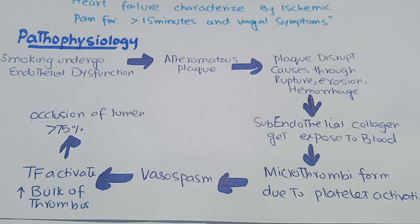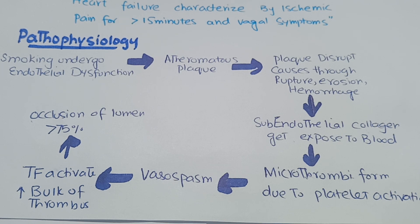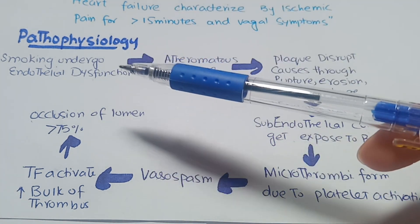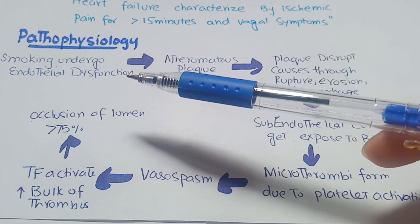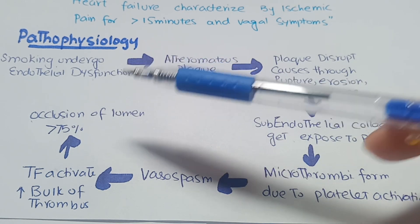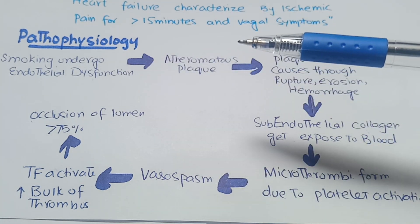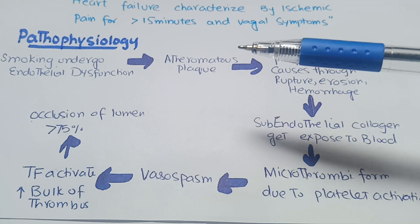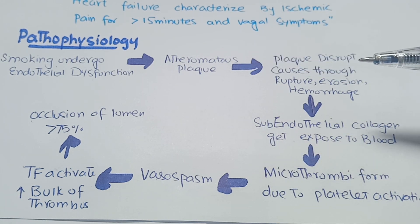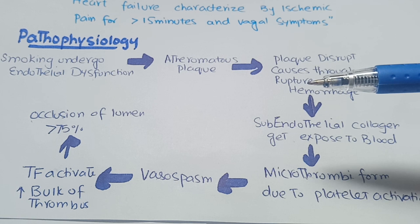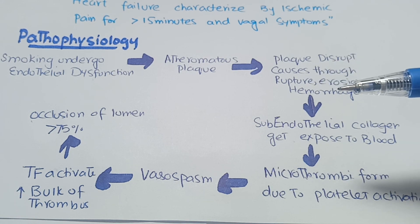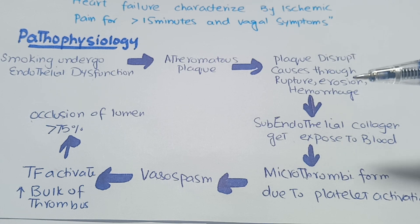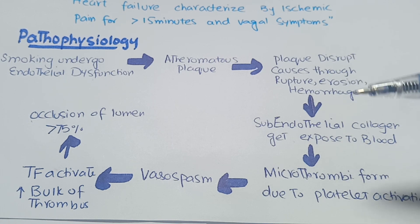Regarding the pathophysiology of ischemic heart diseases, there are certain risk factors — for example, smoking, which causes endothelial dysfunction. Endothelial dysfunction leads to formation of an atheromatous plaque, and this plaque sometimes undergoes life-threatening changes that involve rupture, erosion, and hemorrhage.